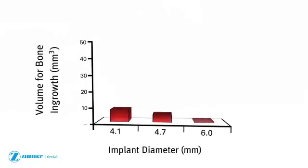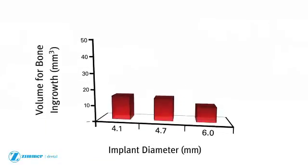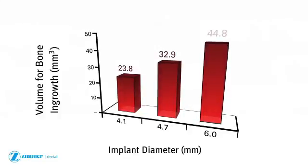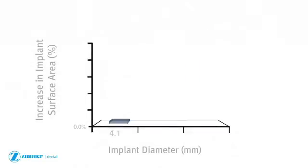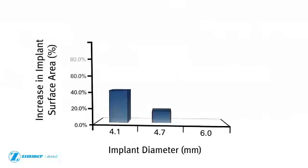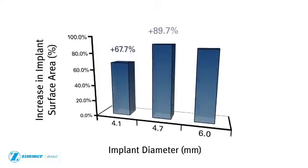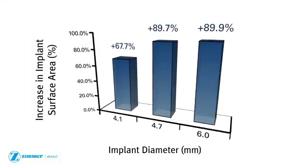In fact, the trabecular metal implant with up to 80% porosity offers nearly 45 cubic millimeters of volume for bone in-growth and close to 90% greater surface area for bone on-growth than traditional implants of a similar size.